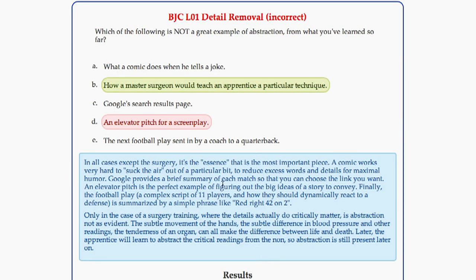Which of these is not abstraction? And say submit, and one of the things you're going to see is it'll come up and show you that you clicked the wrong answer. The right answer is how a master surgeon would teach an apprentice a particular technique. Because in that particular case, you don't want to abstract away the big idea. You want the details about the surgery technique is the most important thing.